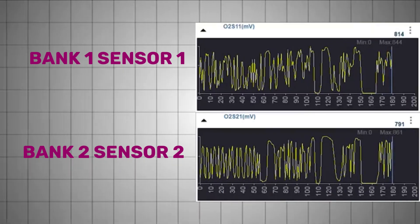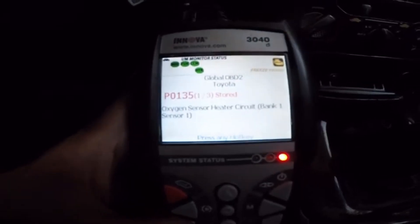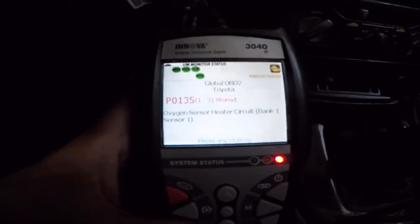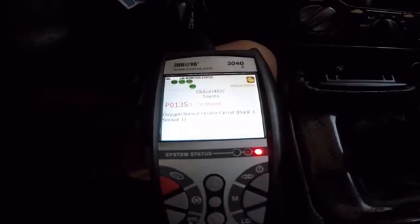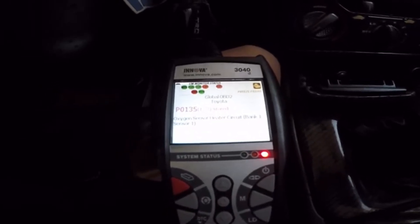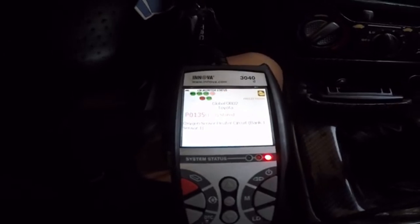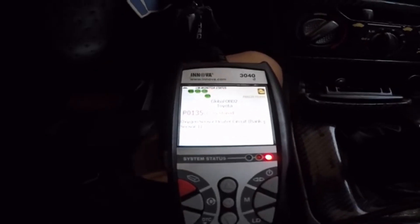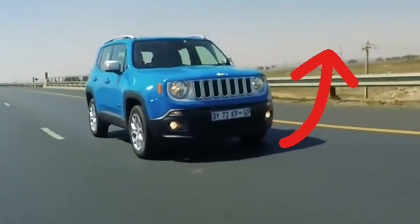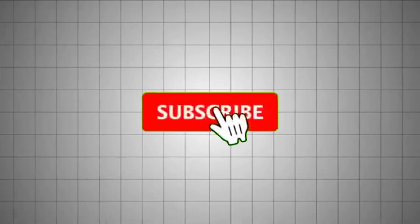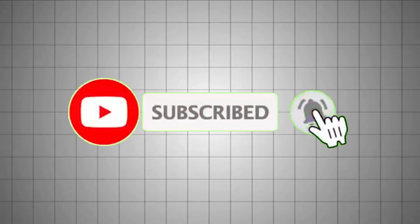If any of these tests reveal a problem, chances are your ECU has already detected it and stored a diagnostic trouble code which can be pulled out with an OBD2 scanner. I've created a dedicated video that explains the meaning of common O2 sensor fault codes and how to diagnose them accurately. You can check it out right here. If you found this video helpful, make sure to subscribe to the channel for more automotive diagnostics and repair guides.